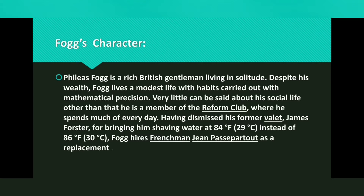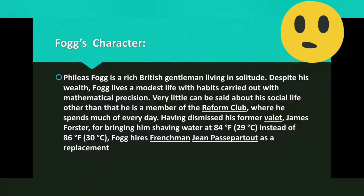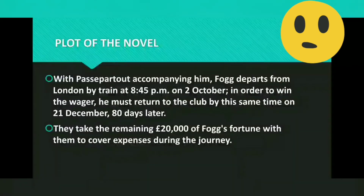The main plot is based on Fogg's travels. Phileas Fogg is a rich British gentleman living in solitude. Despite his wealth, Fogg lives a modest life with habits carried out with mathematical precision. Very little can be said about his social life other than that he is a member of the Reform Club. Having dismissed his former valet James Foster for bringing shaving water at 84 degrees instead of 86, Fogg hires Frenchman Jean Passepartout as a replacement.